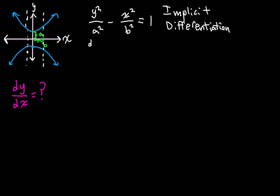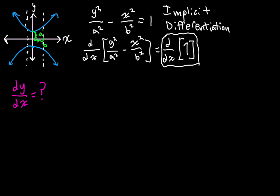All we have to do is take the derivative of both sides. And we're going to take the derivative with respect to x of y² over a² minus x² over b² is equal to the derivative with respect to x of 1. Well, we already know that this over here, the derivative with respect to x of some constant, that's just going to be zero.